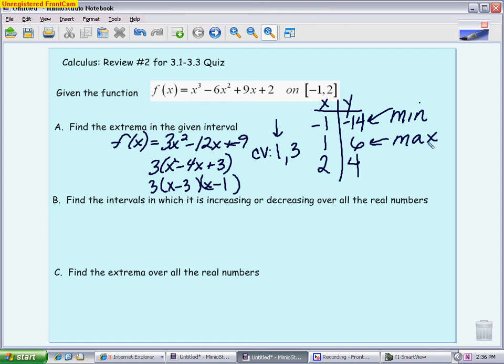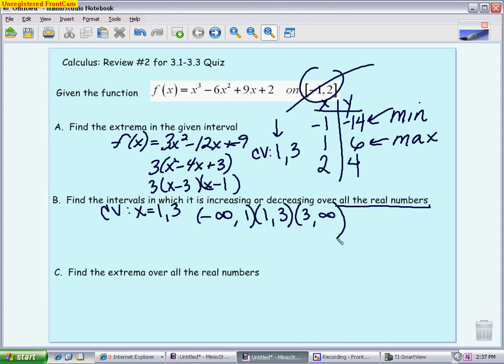Part B takes the exact same function, but now I want to know when it's increasing or decreasing over all the real numbers. I don't care about the interval -1 to 2 anymore. The nice thing is I already did the beginning work—I already know my critical values are 1 and 3. I'll set up intervals from negative infinity to 1, 1 to 3, and 3 to infinity.